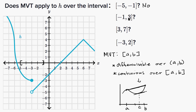Now the second interval, from negative one to three. Over that closed interval, our function just really looks like a line, so it is both continuous and differentiable over that interval. The mean value theorem applies. In fact, every c on this interval has an instantaneous rate of change equal to the average rate of change, because the function looks linear over this interval. So the mean value theorem definitely applies here.